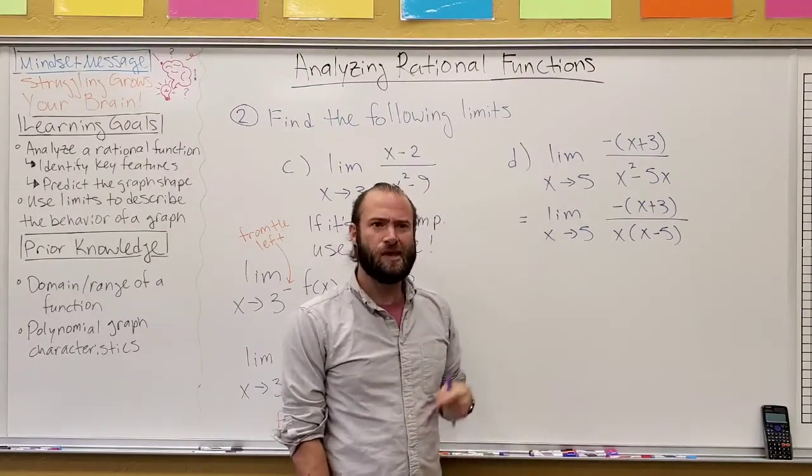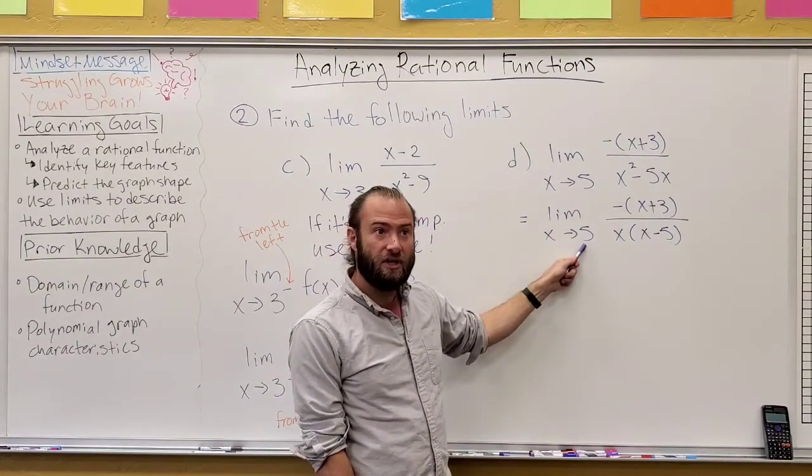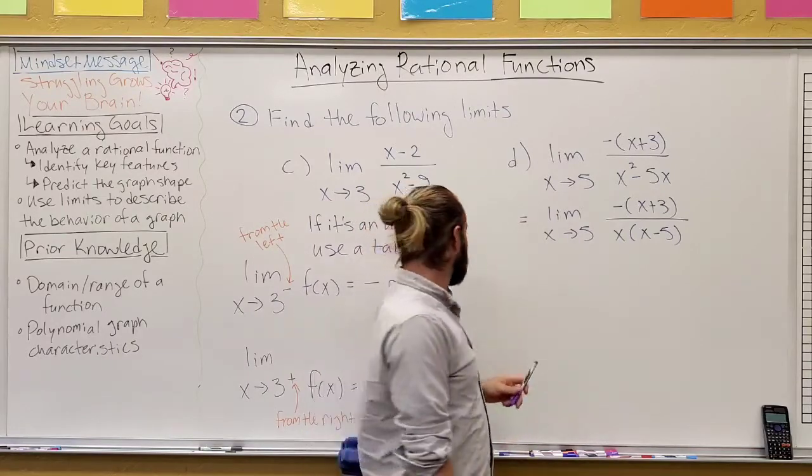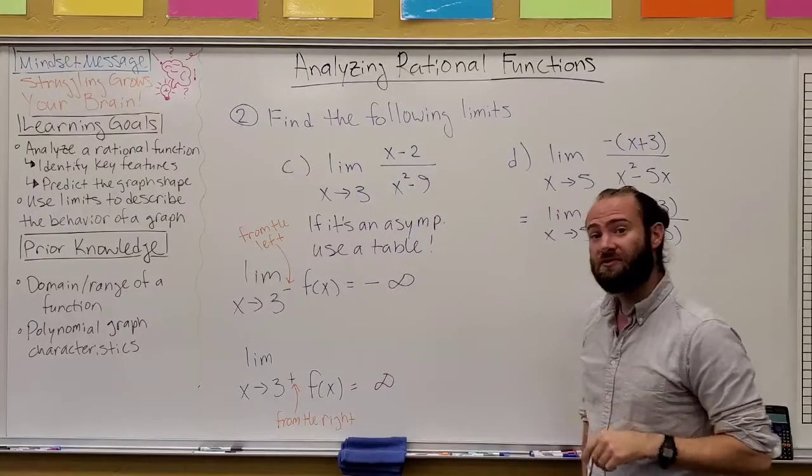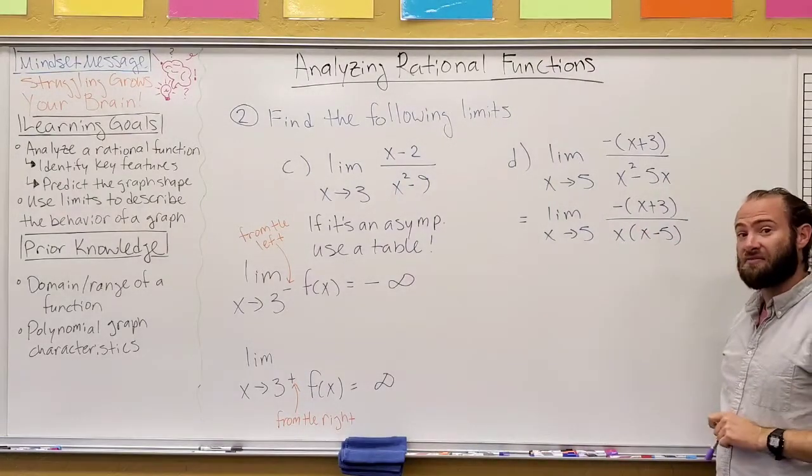So, there's where the asymptotes are. But, since we're specifically asking about the one at five, go ahead and graph it, make a table, and state the two different one-sided limits for this function here on either side of five.